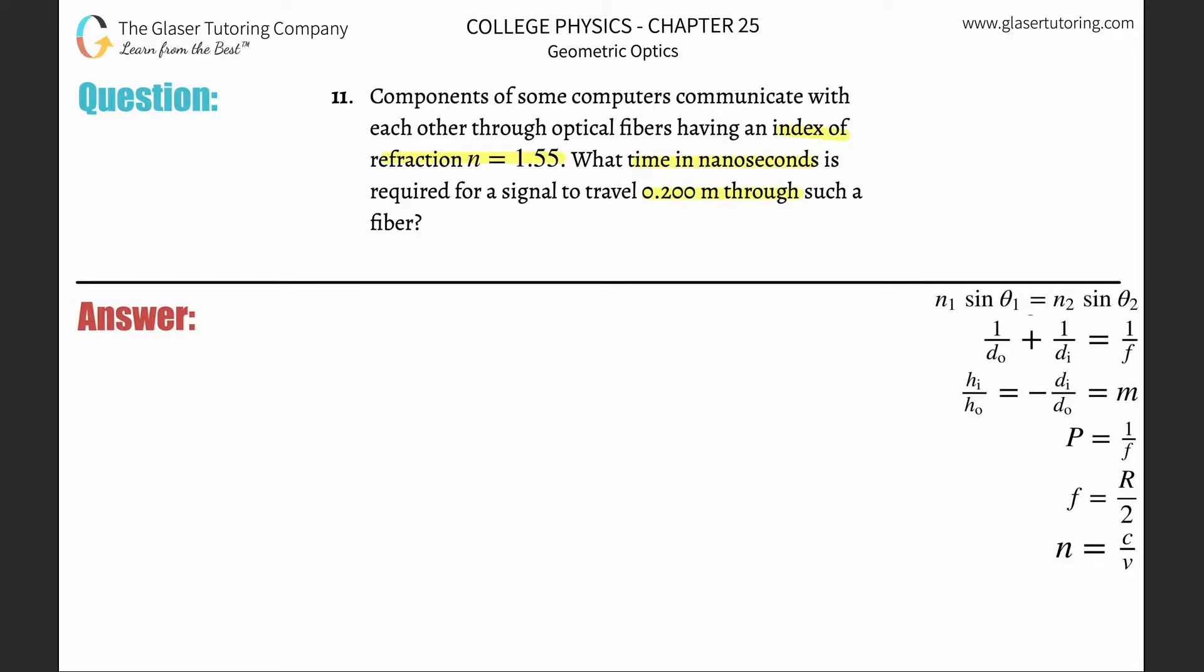So the question is, how can I calculate the velocity of this light ray if I know the index of refraction? Oh right, index of refraction is simply a ratio between the speed of light in a vacuum and the speed of that light in a particular medium.